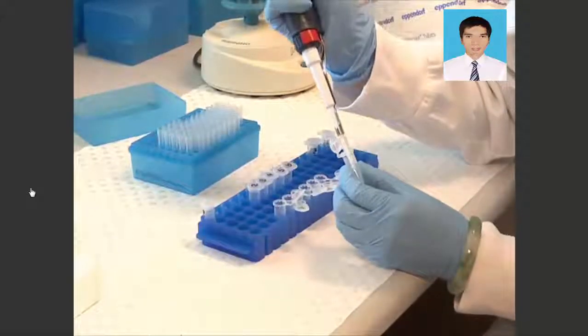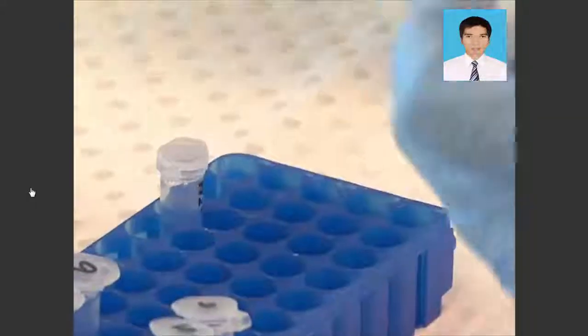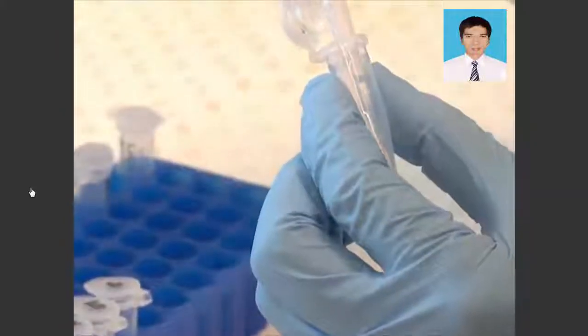To prepare DNA samples for bisulfite conversion, first incubate 2 micrograms of genomic DNA with bisulfite DNA lysis buffer in a total volume of 18 microliters for 1 hour at 37 degrees Celsius.